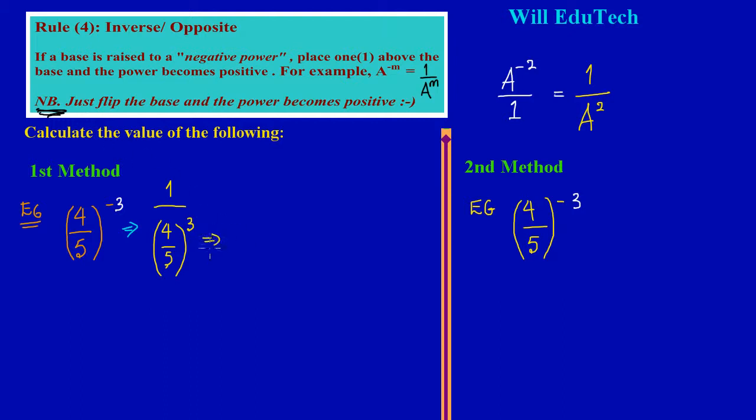This implies that I can write this another way. This is really saying one divided by four upon five, all raised to the positive three. Now this can be quickly simplified.